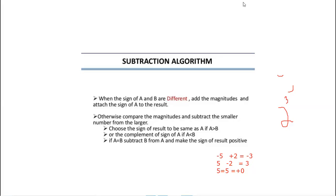In this video, we are going to see about subtraction — how we can do binary subtraction of signed numbers. When the sign of A and B are different, then add the magnitudes and attach the sign of A to the result.